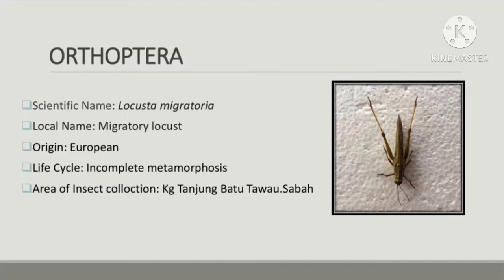The migratory locust is the most widespread locust species and the only species in the genus Locusta. It occurs throughout Africa, Asia, Australia, and New Zealand, and used to be common in Europe but has now become rare there. Locusts consume leaves and tender tissues of plants; they are strong fliers as adults and tenacious hoppers as nymphs. Large swarms of locusts can completely strip the foliage and stems of plants such as forbs and grasses. They have yellow spots on their bodies and are large in size.